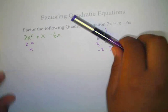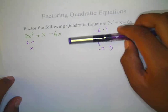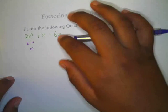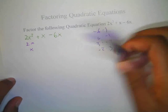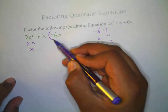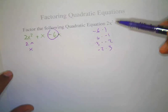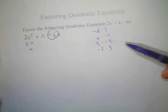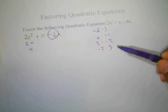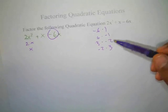And then we have to find out what two numbers multiply to make negative 6 right here. All right, as you see over here, so I'm going to choose a set, see which one works.